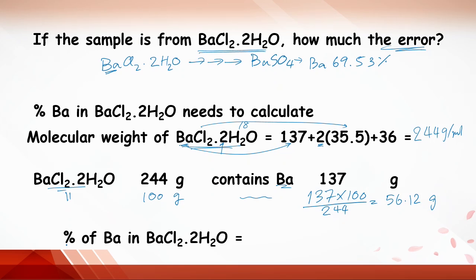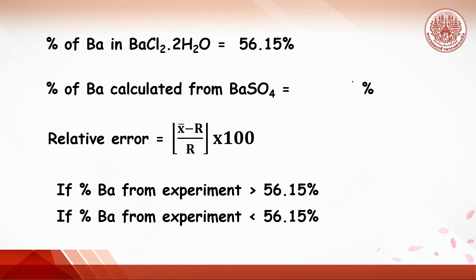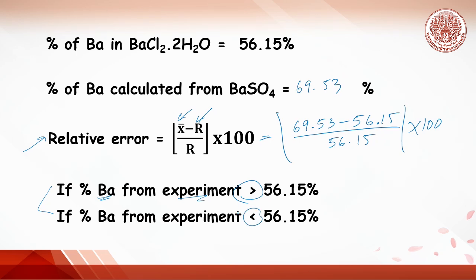This number means the percent of barium in barium chloride dihydrate is 56.12%. Now we got this number and this number. We can find percent relative error. This one is 69.53 from experiment, this is from theory. So it is 69.53 minus 56.15 divided by 56.15. In student experiment, we have two results. If the barium from the experiment is more than 56.15 or less than 56.15, please find the reason why the experiment and the data is not equal.